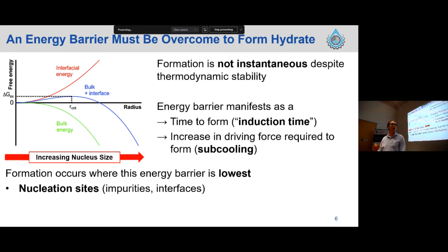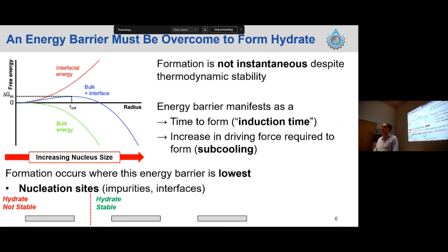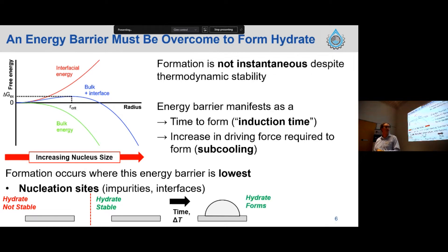Where hydrate formation actually happens in our system is where this blue energy barrier is lowest, and that's what we call nucleation sites. That is usually either at impurities or interfaces in our system. So if this little grey box represents our nucleation site, we start outside the hydrate stability region where it's not stable. Even when we enter the stability region, we don't see instantaneous formation — we have to either wait an increased amount of time, or the subcooling has to increase before hydrate will form.